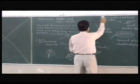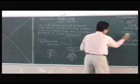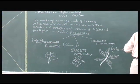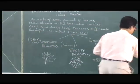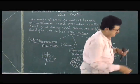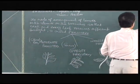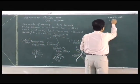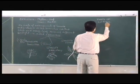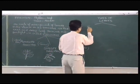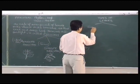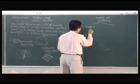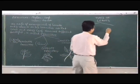Next, we come to the types of leaves. There are two types of leaves: simple leaves and compound leaves.